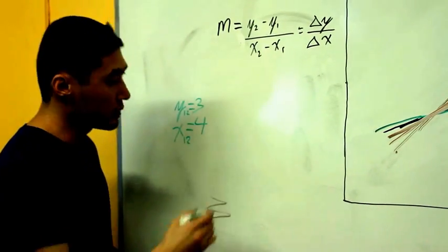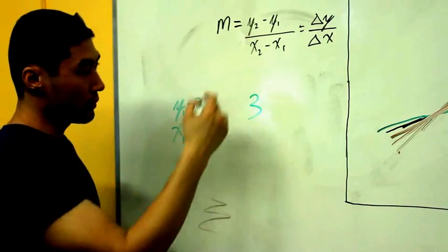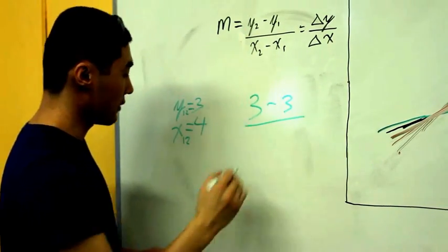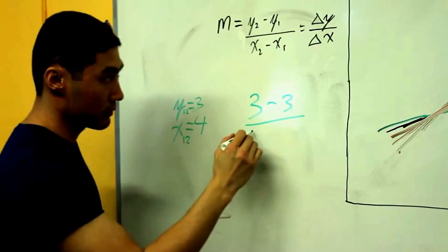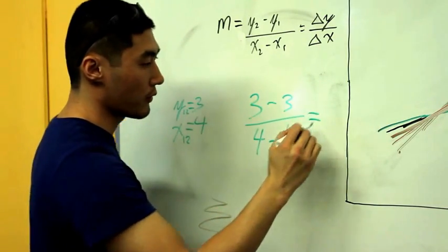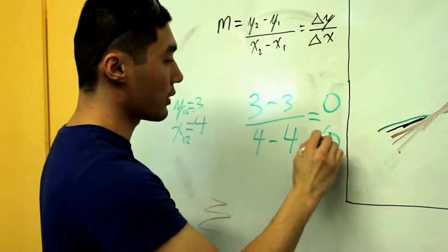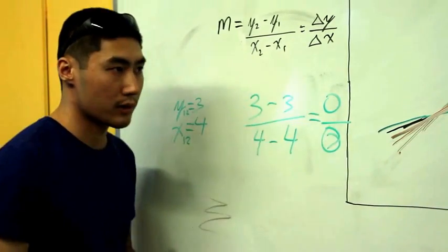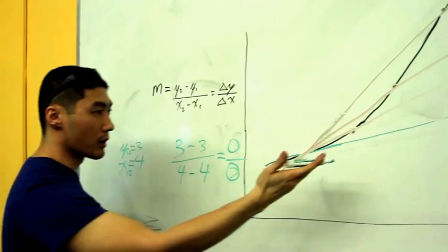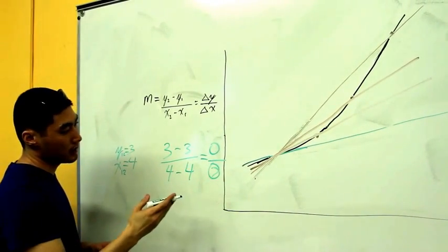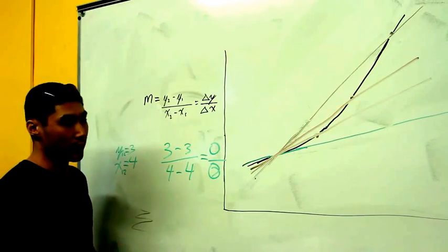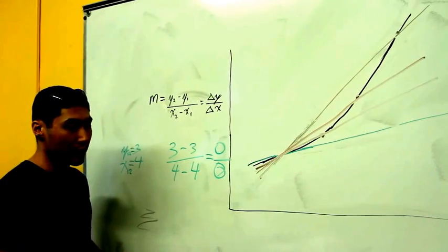Let's plug it into our equation and find out. So y2 is 3 and y1 is 3 divided by x2, which is 4, minus x1, which is 4. What we find is that we're dividing by zero, and we cannot do this. And this is why it's important to understand the concept of the approach, not the answer at that given point. And this is the concept of the tangent line problem.